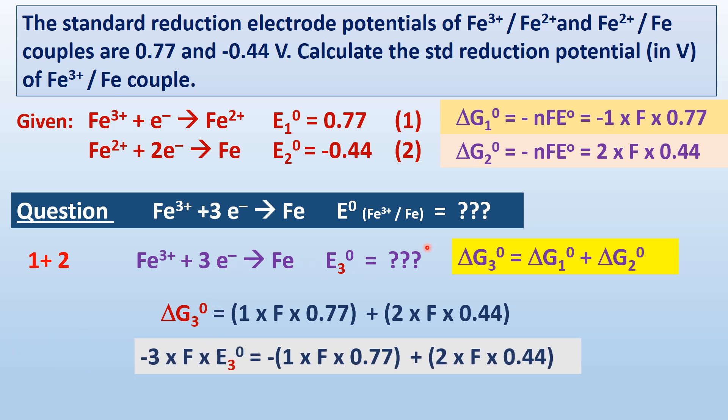Delta G₃⁰, that is equal to 3 electrons into Faraday constant into E₃⁰. This is what we need to calculate in this problem. This equals 1F × 0.77 and 2F × 0.44. From this expression, on cancelling F on both sides, E⁰ equals minus 0.037 volt. This is the answer.